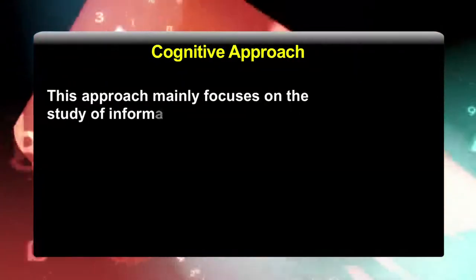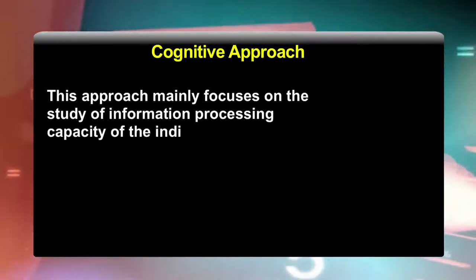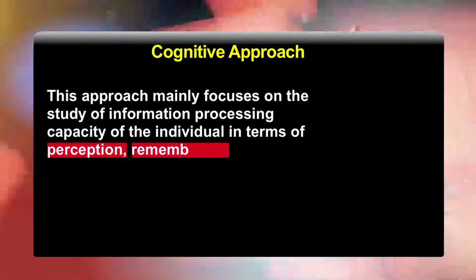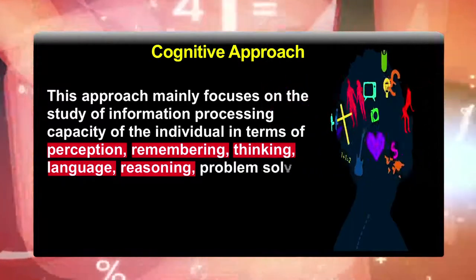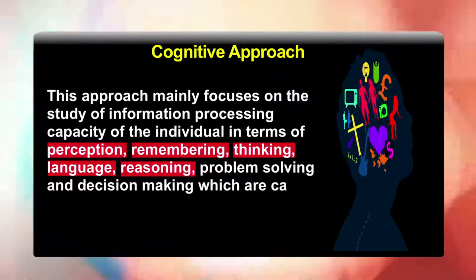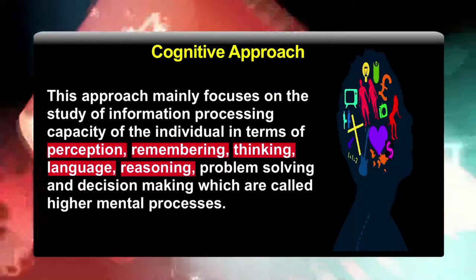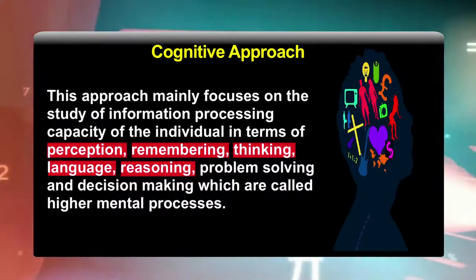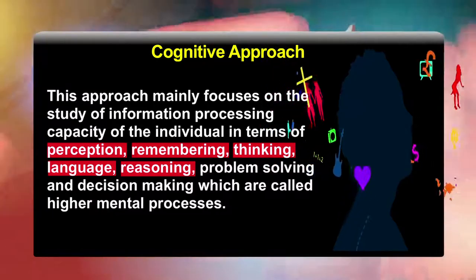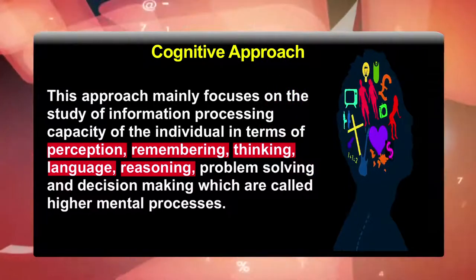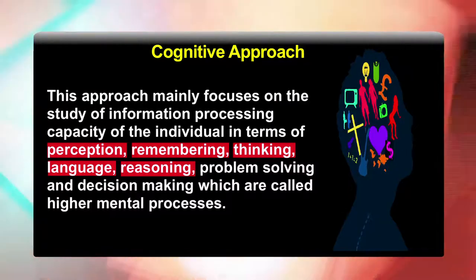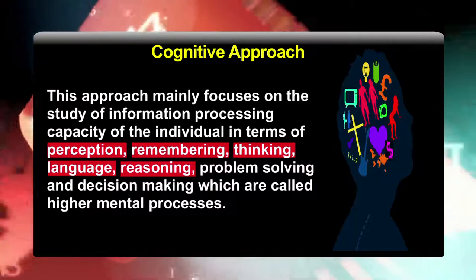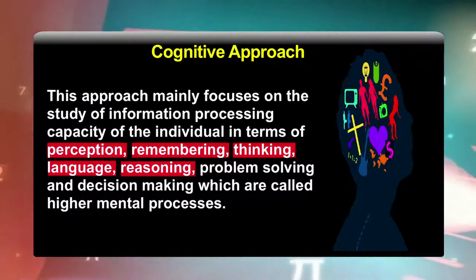The cognitive approach emerged as an alternative to the mechanistic paradigm of behaviorism. This approach mainly focuses on the study of information processing capacity of the individual in terms of perception, remembering, thinking, language, reasoning, problem-solving and decision-making. It proposes that we look out for information in the world and our behavior depends upon the way we process this information. This approach largely relies on computational models and assumes that behavior and mental processes can be best understood by treating them in terms of information processing.